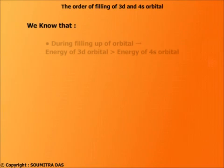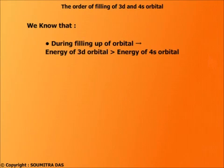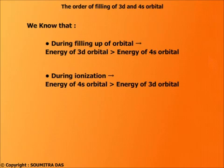Now we have learned so far 4s orbital has less energy than 3d orbital and so 4s orbital is filled up before 3d orbital. While ionization, the electron is lost from the orbital having highest energy and that is obviously the 4s orbital and not the 3d orbital.